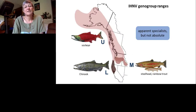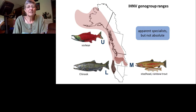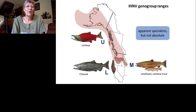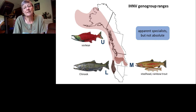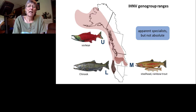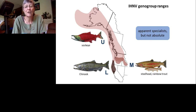Spatially on the west coast of North America, the U virus is in the northern range — Alaska, British Columbia, and Washington. The L virus is in the southern range in California. The M is in Idaho, extending into an overlapping area with U in Washington and Oregon. For many years we thought IHN basically evolved towards specialism — but there is one exception right in the middle where U and M ranges overlap: the Columbia River Basin.